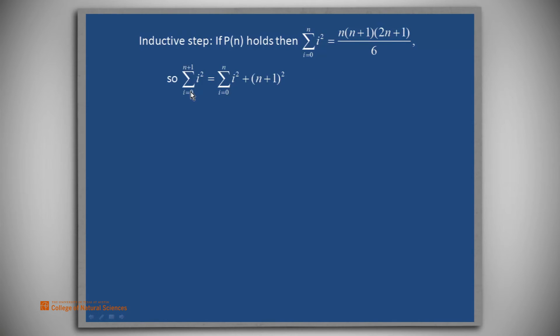So first, just staring at the summation, we have i equals 0 to n+1. But what we do is strip off the last term, the (n+1)st term of this,